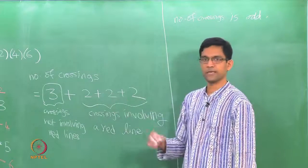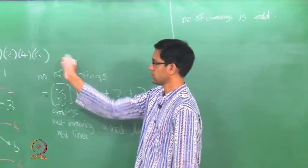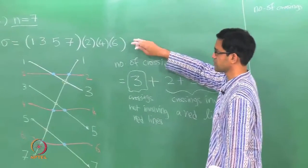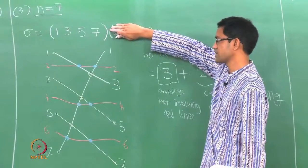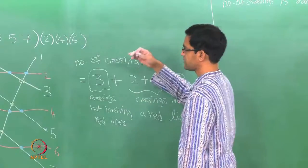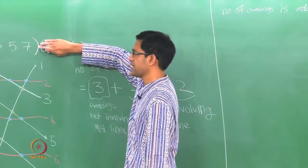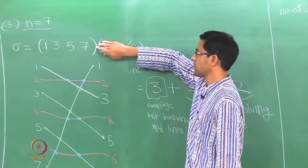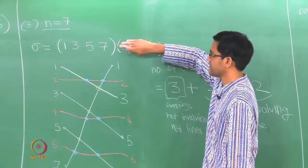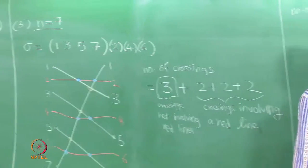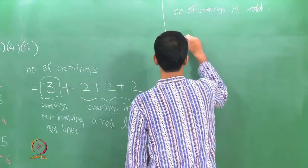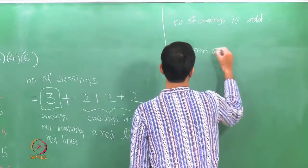This is the general phenomenon. For a permutation like sigma that only cyclically permutes some elements and fixes the rest, the sign is just the same as the sign of the underlying cycle. The fixed-point lines always contribute an even number of crossings and do not affect the sign. So the number of crossings is odd, and the sign of sigma is minus 1.